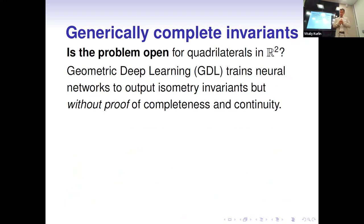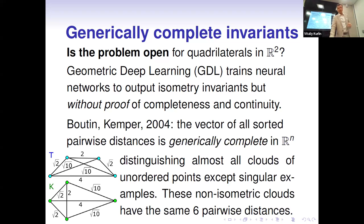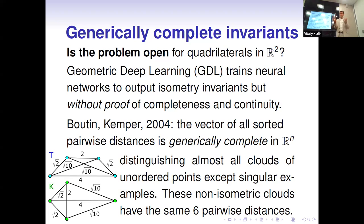For four points — quadrilaterals — geometric deep learning experimentally tries to solve essentially the same problem of isometry invariants, but unfortunately without proofs of completeness and continuity. A counter-example to naively extending the SSS theorem: for four points we have six distances, and these six distances are almost enough. Boutin and Kemper almost solved the problem twenty years ago — in general position the full set of pairwise distances is a complete invariant, but unfortunately counter-examples exist.